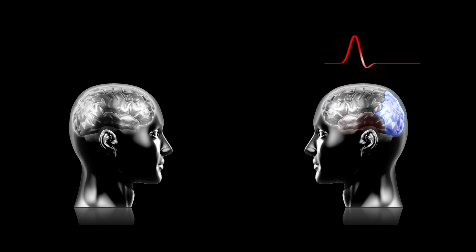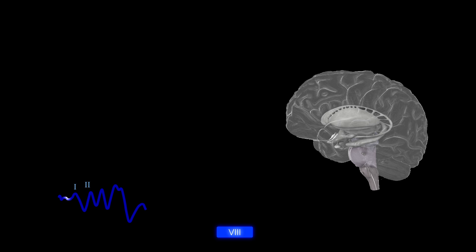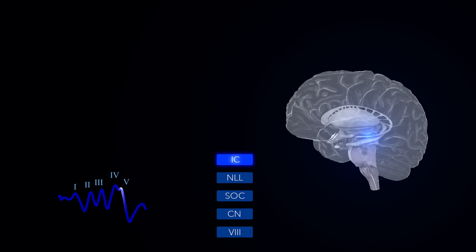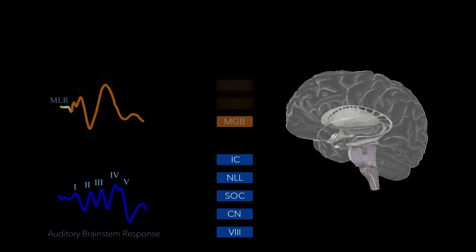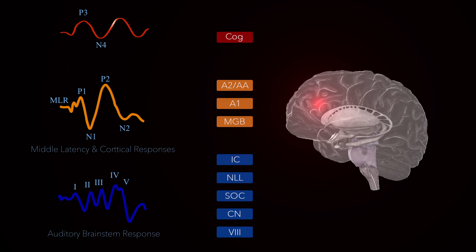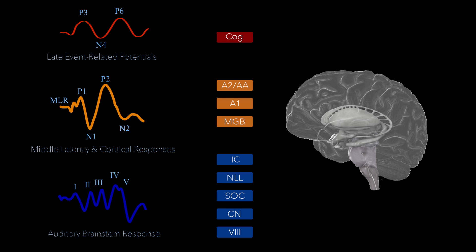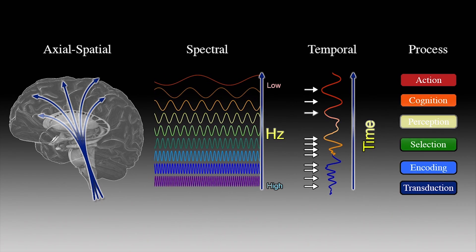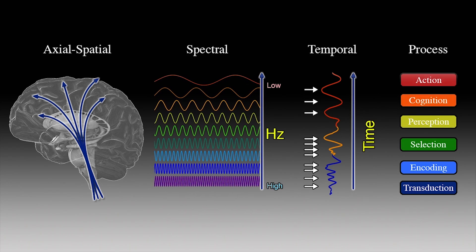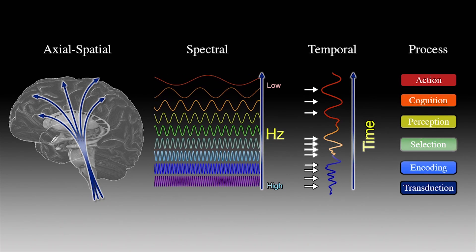When processing a sound, energy transduced by the cochlea generates action potentials at the auditory nerve, which leads to peak activity in the cochlear nucleus, then the superior olivary complex, the nucleus of the lateral lemniscus, and the inferior colliculus. Each of these contribute to peaks in a waveform known as the auditory brainstem response, which is shown here on the left. From the brainstem, information is then transmitted to the auditory thalamus and cortex, which contribute to the middle latency and cortical responses, shown here on the left as well. Finally, higher order cortical regions contribute to the so-called late potentials, which reflect cognition and executive function. Taken together, this pattern of sequential processing represents several hierarchies of functional brain activity.